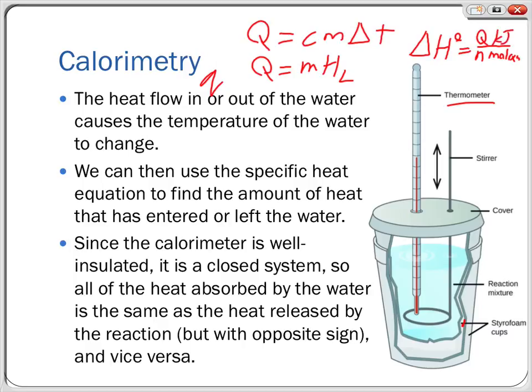Since the calorimeter is well insulated as a closed system, pretty much all the heat goes into the temperature rise or fall of the water. We don't have to worry about heat loss to the outside surroundings — we limit ourselves to just the water as our surroundings, which is what makes the calorimeter work.